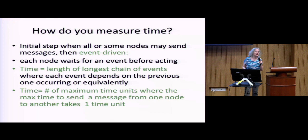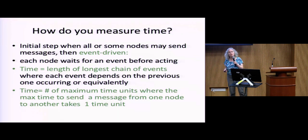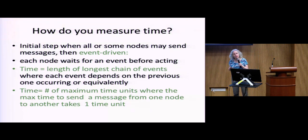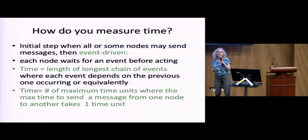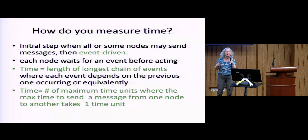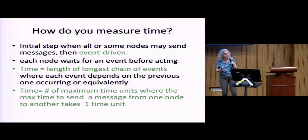How do you measure time in an asynchronous model? All the nodes do some initial action, then the actions are event-driven — a node acts only when it receives messages of a certain sort. There's no notion of time, no global clock. You can measure time by the length of the longest chain — if A is waiting to hear from B, who was waiting to hear from C, that's a chain. Alternatively, if you knew the maximum time any message from A to B takes, you could count that as one unit and measure time that way.